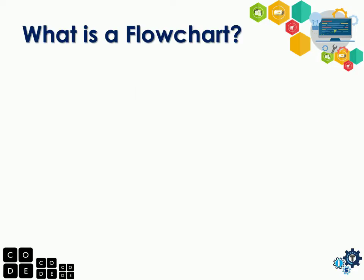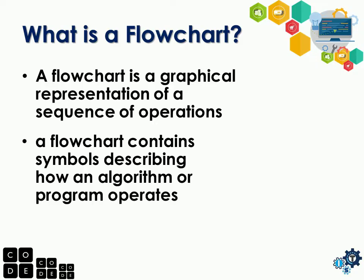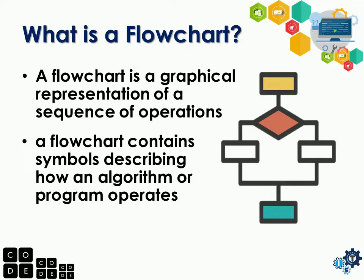What is a flowchart? A flowchart is a graphical representation of a sequence of operations. A flowchart contains a symbol describing how an algorithm or a program operates. Basically, flowcharts are graphical representations or images that represent the sequence or arrangement of an operation. Flowcharts use different symbols or shapes, which will be discussed in the next slide, to represent the operation.